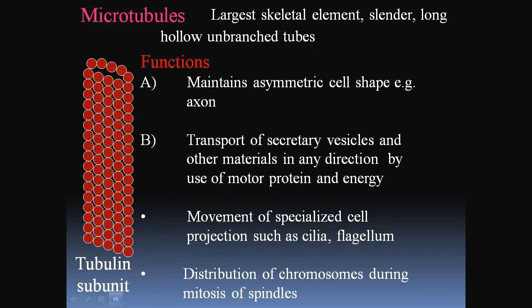Microtubules are the largest skeletal element — slender, long, hollow, unbranched tubes. Their functions include maintaining asymmetric cell shape, transport of secretory vesicles and other materials in any direction using motor proteins and energy, movement of specialized cell projections such as cilia and flagella, and distribution of chromosomes during mitosis via spindles.